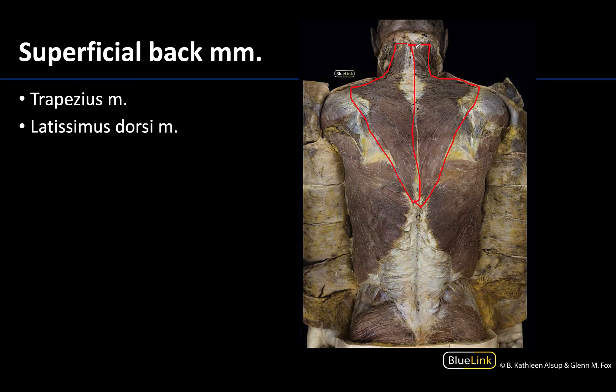It will continue to have its attachments on the spinous processes, and then will have distal attachments to the clavicle, the acromion, and the spine of the scapula. So when it contracts, it will directly affect the actions of the scapula.